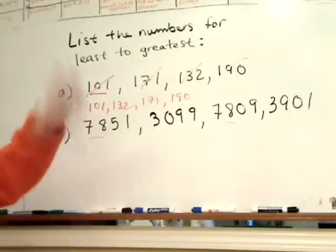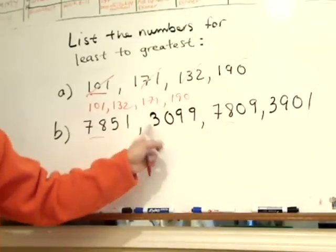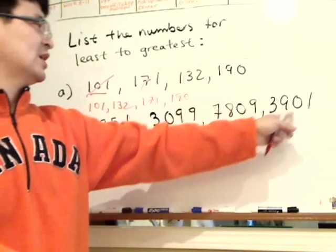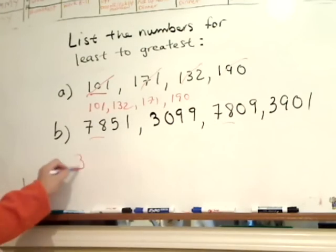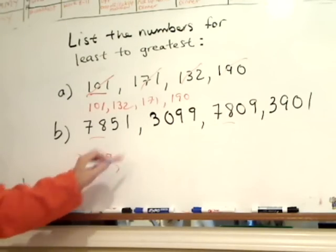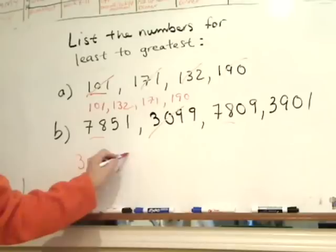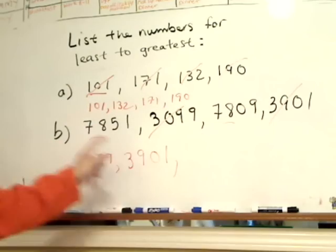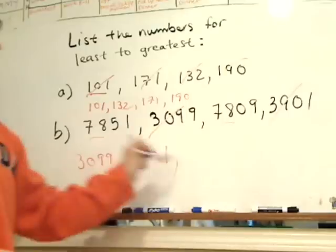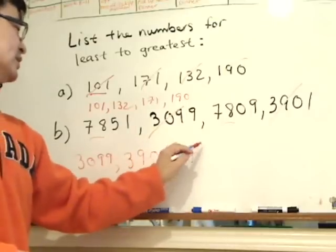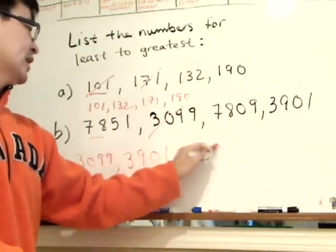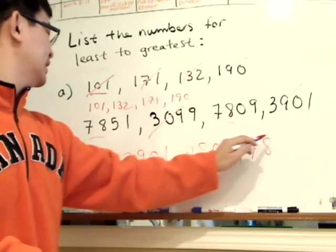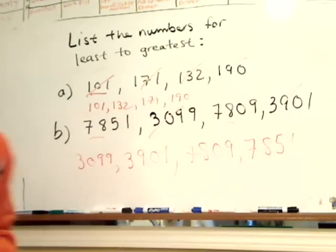So we're going to, that would be the biggest number, and the smallest number would be 3,099, compared to 3,901. So from the least, 3,099, cross that out, 3,901, cross that out, then you compare. Of course, I said that this was smaller than this one, so 7,809, and then 7,851. Very straightforward.